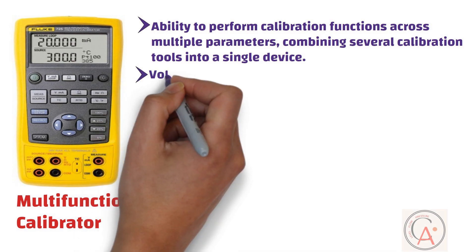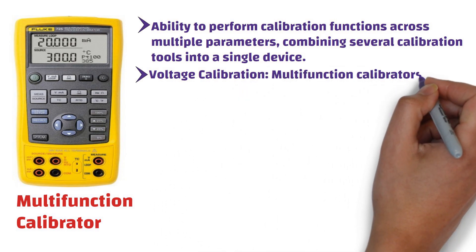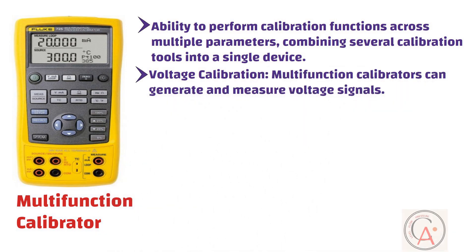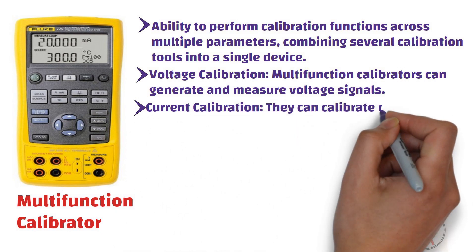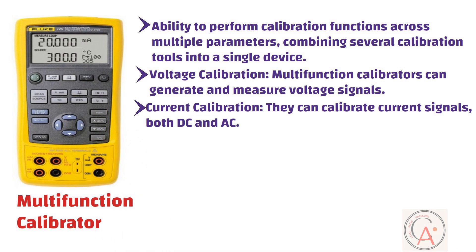First is voltage calibration. Multifunction calibrators can generate and measure voltage signals, including direct current and alternating current voltage at different frequency ranges. Second is current calibration. Multifunction calibrators can calibrate current signals, both DC and AC. This is particularly useful for calibrating current transmitters and sensors.